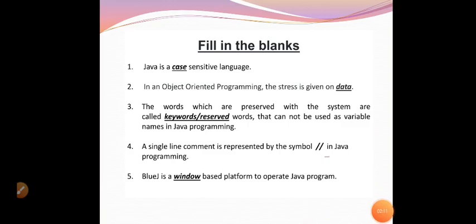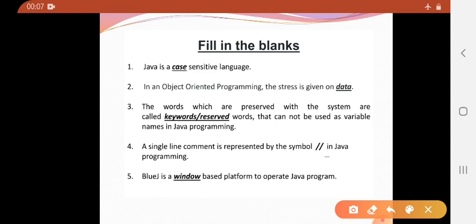Next, Fill in the Blanks. Java is a case-sensitive language. In object-oriented programming, the stress is given on data. The words which are preserved with the system are called keywords or reserved words, that cannot be used as variable names in a Java program. A single line comment is represented by the symbol double slash. BlueJ is a window-based platform to operate a Java program.